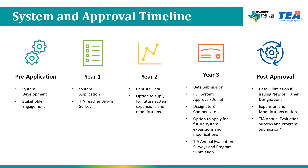Before applying for a local designation system, districts must complete the larger work of developing the system and engaging with stakeholders. The district will make key decisions around who is eligible for a designation, the designation criteria and performance data, and the district's proposed compensation plan. Once those decisions are made, the district can begin completing their system application and submitting it in the spring of year one.